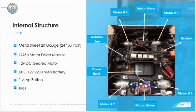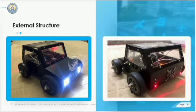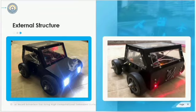Now we have the internal structure of our car. As you can see in the image, there is an Arduino Uno, Jetson Nano, a power bank for the Jetson Nano, a LiPo battery for the Arduino, motors, a motor driver for two motors, and another motor driver for the other two motors. The car was constructed using a metal sheet of 24 by 30. Here is the external structure: you can see the lights at the front, the camera mounted, and at the back you can see the indicators — stop sign or indicators for moving forward, left, or right. We also have an exhaust fan on the back, tires, and on/off switches.